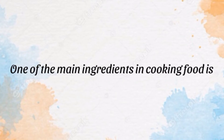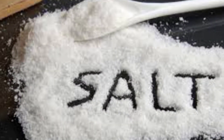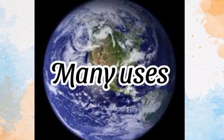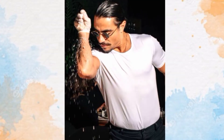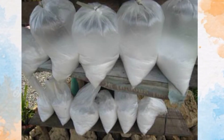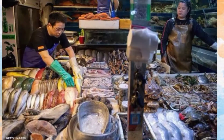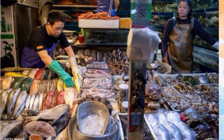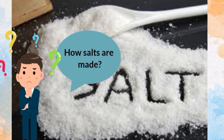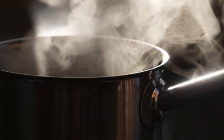One of the main ingredients in cooking food is salt. Salt serves as an important element in our planet because of its many uses. We often see the crystal white color that adds flavor to our everyday meal. Salt is also used as a component of other products sold in the market. But have you ever wondered how salts are made?